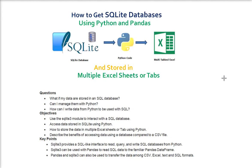There are some objectives: use the sqlite3 module to interact with a SQL database, access data stored in SQLite using Python, and store the data in multiple Excel sheets or tabs using Python. Key points include: sqlite3 provides an interface to read, query, and write SQL databases from Python, and sqlite3 can be used with Pandas to read SQL data into a familiar Pandas DataFrame.